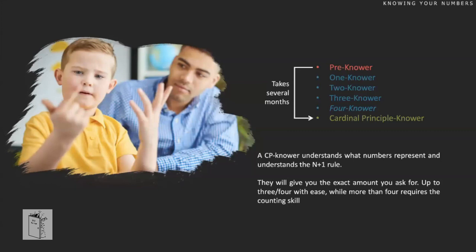What we see is that kids start to learn how much each word means, one by one. At first they have no idea and give you a random number. At some point they realize how much 'one' is — ask for one stuffed animal and they'll get you exactly one every time. But ask for two and they're lost again, giving you something random. Then after a few weeks they learn 'two,' then 'three,' up to about four.